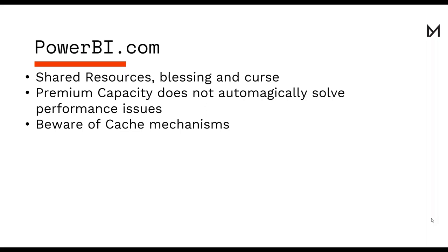Caching mechanisms are something you really need to keep in mind. If you browse a report, go away, and come back and it loads super fast, you might think you've fixed it — but caching means results are temporarily stored in a separate memory block and reused when the same query is requested again. This can give you a false sense of positivity when troubleshooting performance.